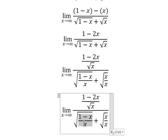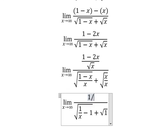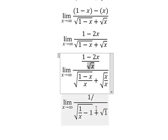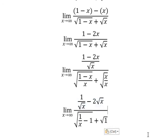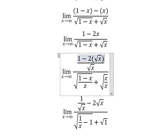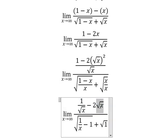Now we have one minus s, and we simplify again. We have one divided by the square root of s, and s divided by the square root of s. Since s equals the square root of s to the power of two, dividing gives us the result shown here.